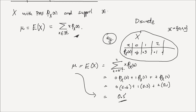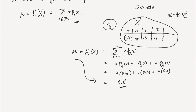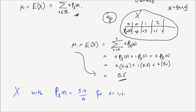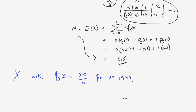One more example before we go to continuous random variables. Let's say we have a random variable x with PMF P_x(x) equal to (5 minus x) divided by 10, for values x = 1, 2, 3, and 4. What is the expectation of this random variable x — the mean, or the first moment? All those names can be used interchangeably.